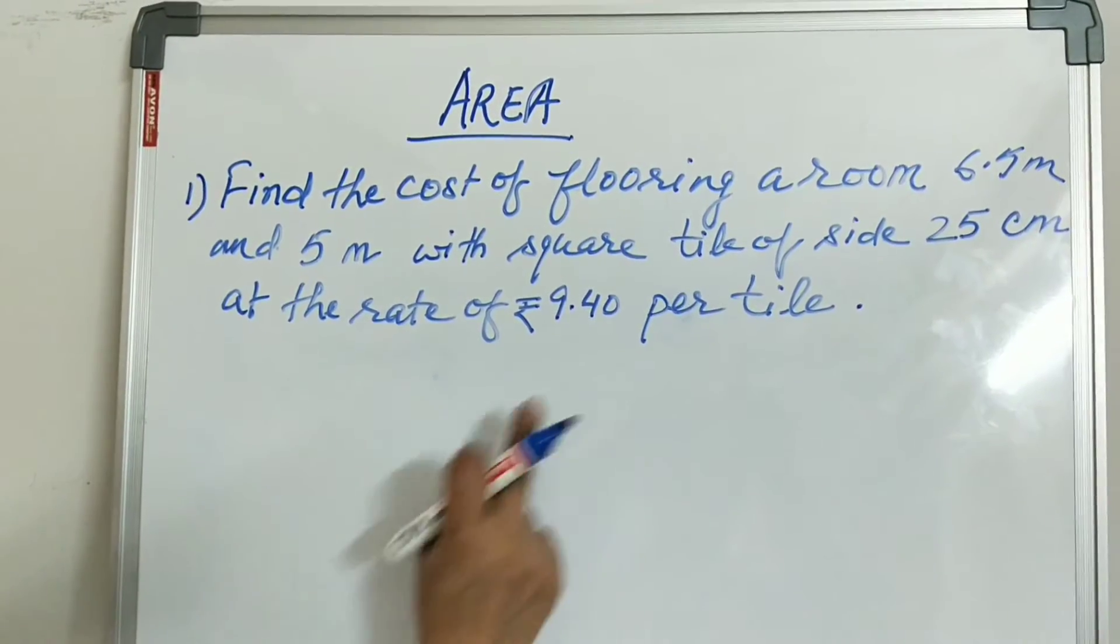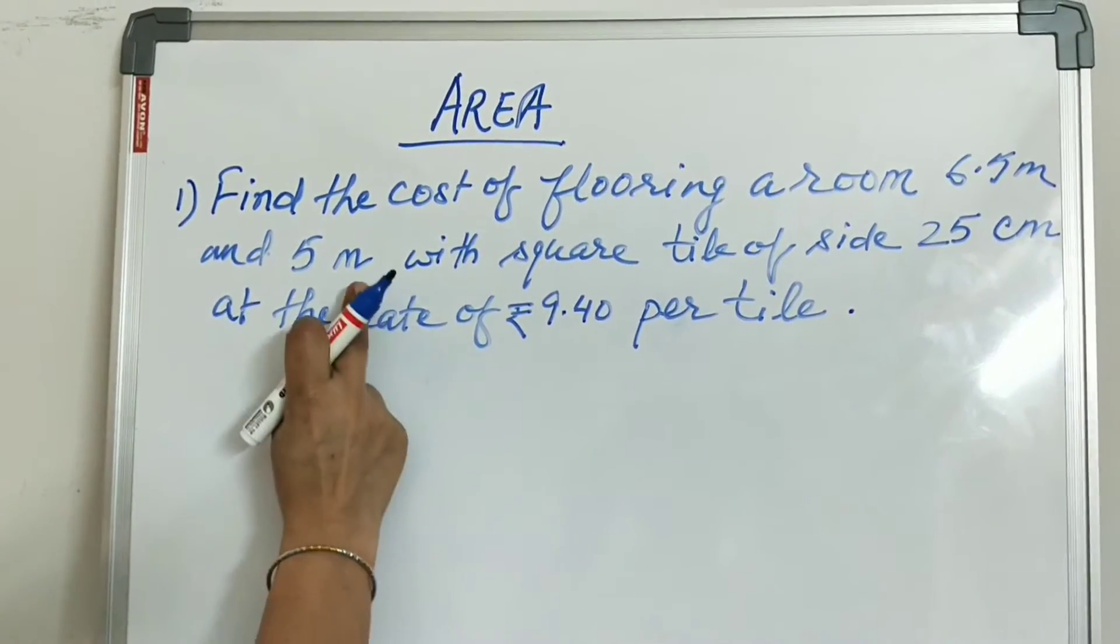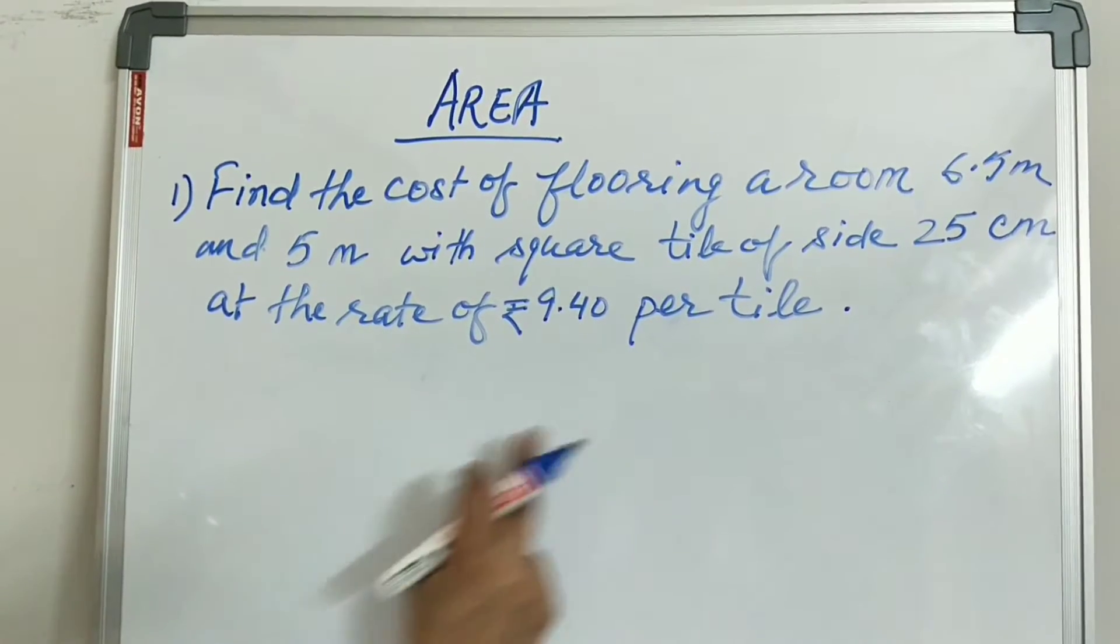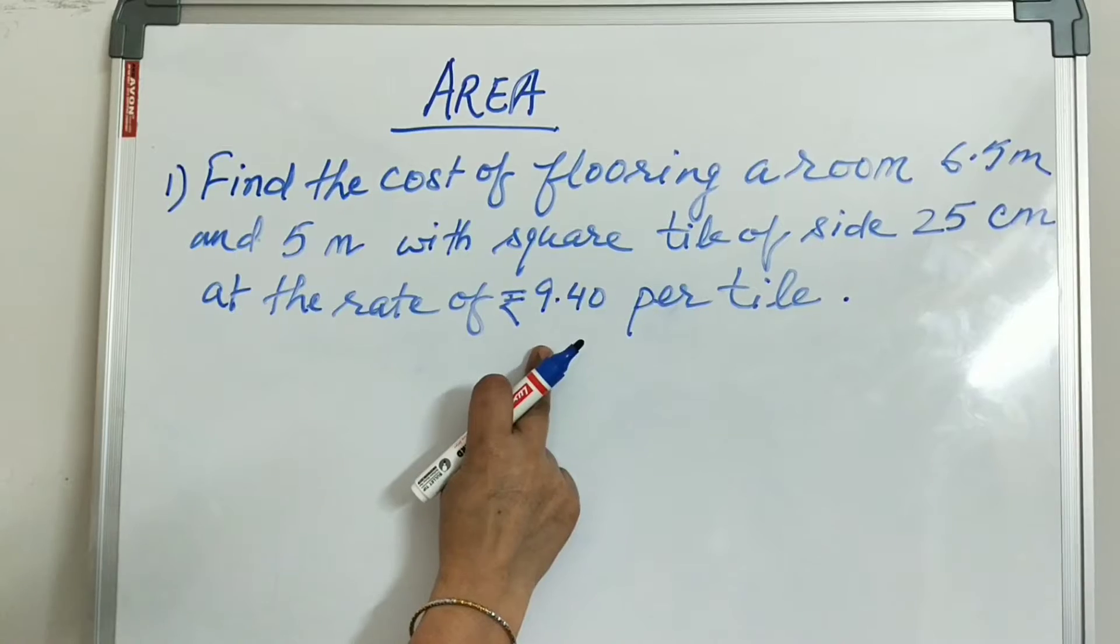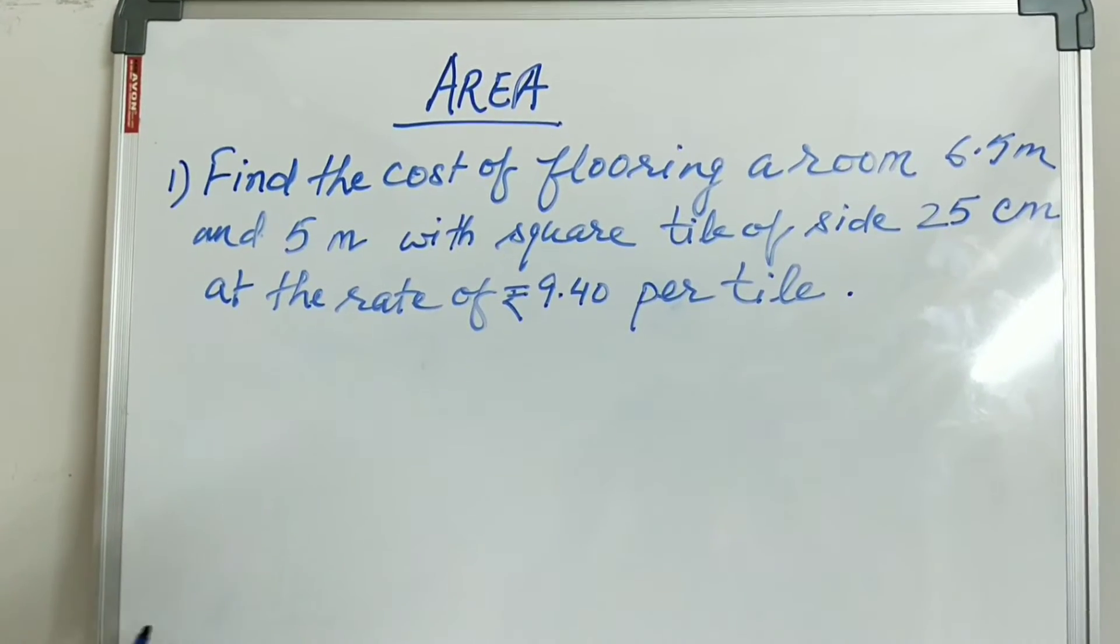Question is, find the cost of flooring a room 6.5 meter and 5 meter with the square tile of side 25 cm at the rate of rupees 9.40 per tile.